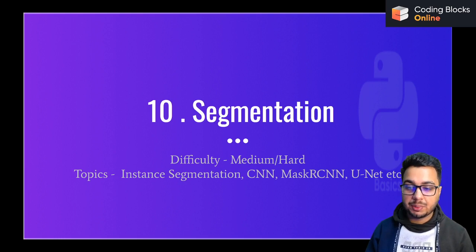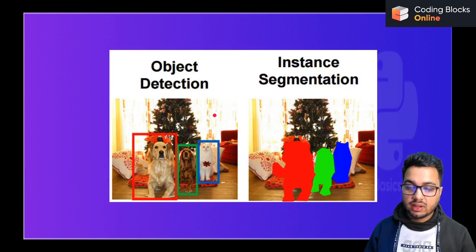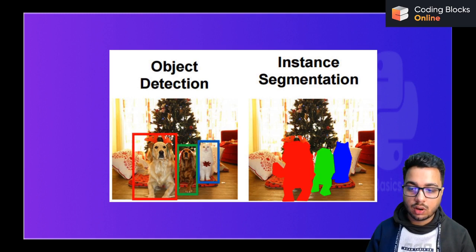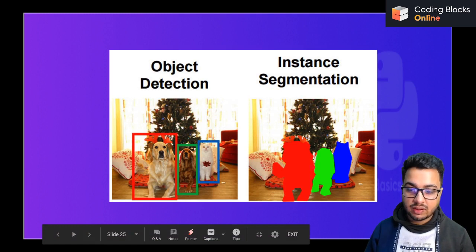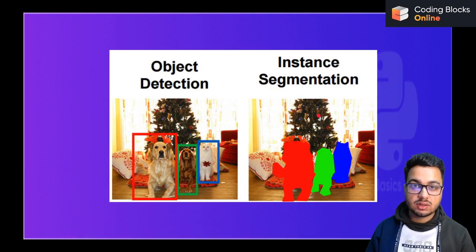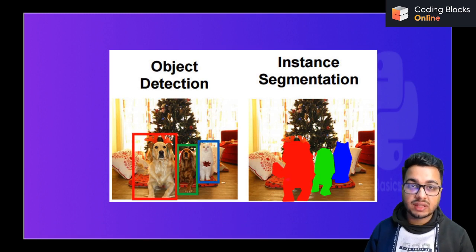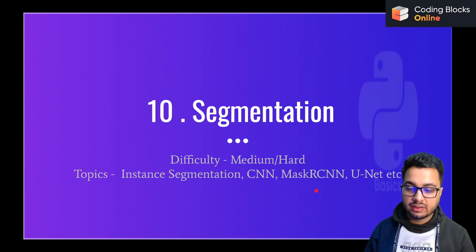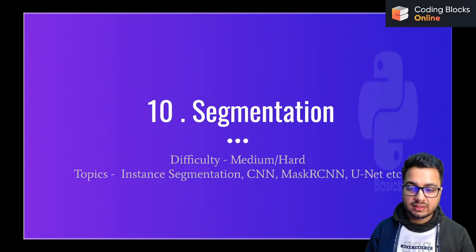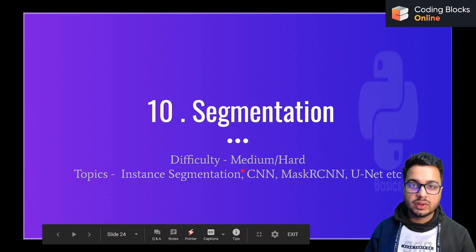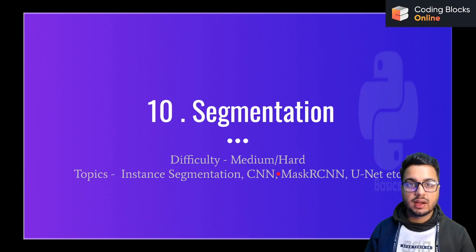Another computer vision application is image segmentation. Classification tells you what is in an image; object detection tells you where the object is and what it is; instance segmentation gives you pixel-level classification of each object. For example, with three dogs in a scene, you can extract each instance with a pixel-level boundary. Architectures such as Mask RCNN and U-Net can be used for segmentation tasks. Using an open source implementation makes it not very difficult to train a model.